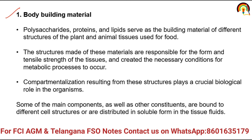Some of the main components as well as other constituents are bound to different cell structures. A cell is made up of carbohydrate, protein, and lipid, where protein and lipid are present in larger amounts. When carbohydrate integrates with protein it is called proteoglycan; when it integrates with lipid it is called glycolipid or glycocalyx. These materials are distributed in soluble form in tissue fluid and are primarily responsible for body building.